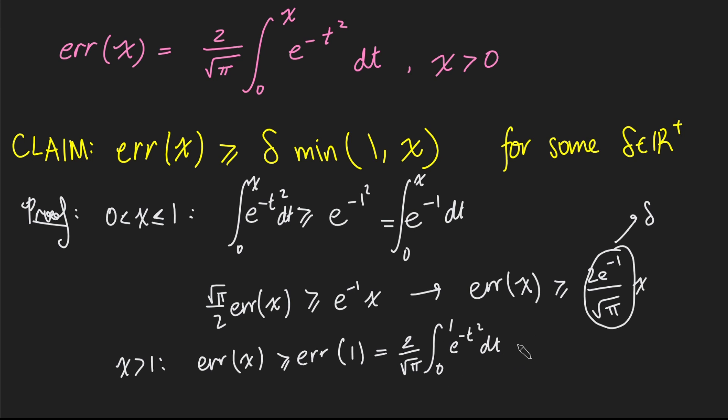But we can say that this is bigger than or equal to 2 over root pi times the integral from 0 to 1 of e to the negative 1 dt. Again, using the fact that e to the negative t squared is a decreasing function. And this thing here is just 2 over root pi times e to the negative 1, which is just delta. And so we get the error of x is at least delta.